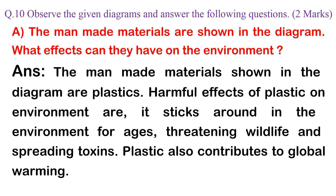A. The man-made materials are shown in the diagram. What effects can they have on the environment? Answer: The man-made materials shown in the diagram are plastics. Harmful effects of plastic on the environment include: it sticks around in the environment for ages, threatening wildlife and spreading toxins. Plastic also contributes to global warming.